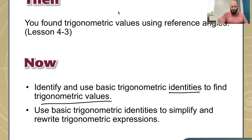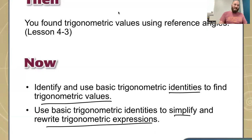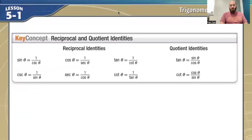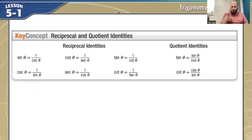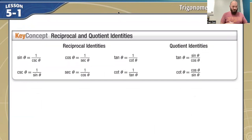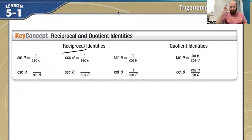We're also going to be able to simplify and rewrite our trigonometric expressions. So here are some very basic ones — our reciprocal and quotient identities. You've actually kind of talked about these already, especially with sine, cosine, tangent, and being reciprocals of cosecant, secant, and cotangent. When we talk about reciprocals, we're just taking it and doing the flipping of it. So that's our reciprocal there.